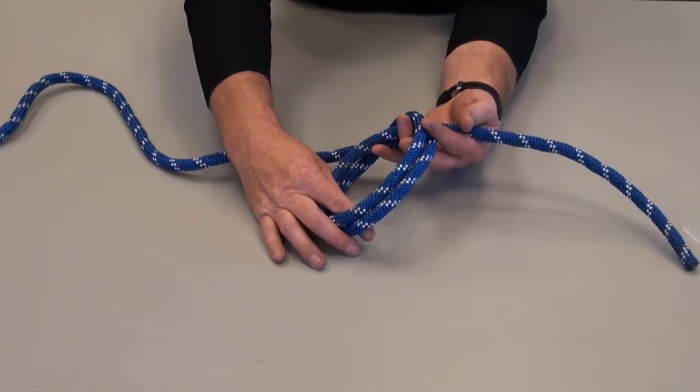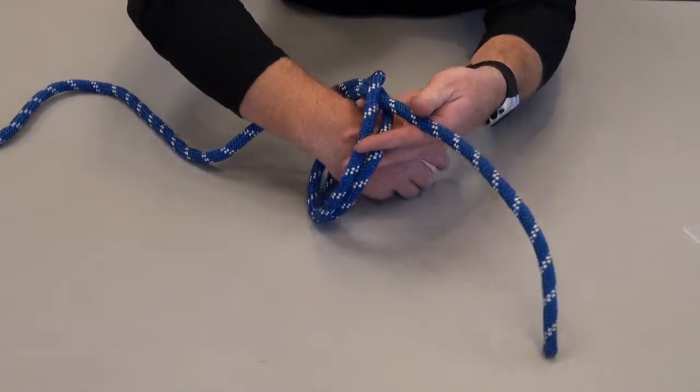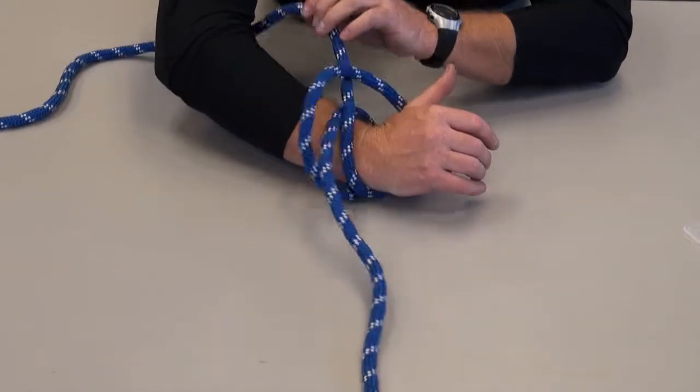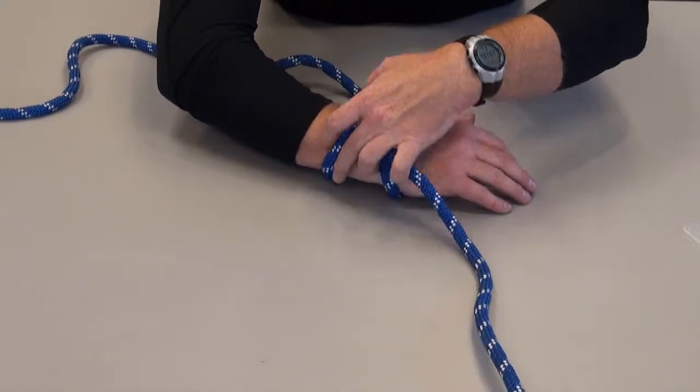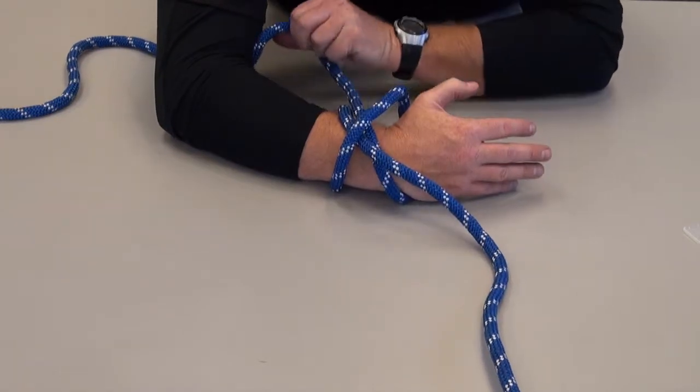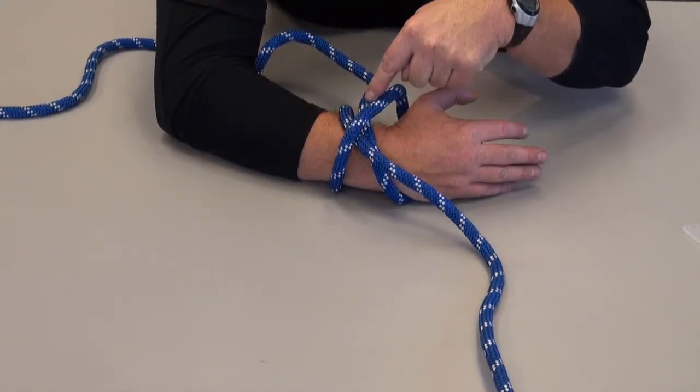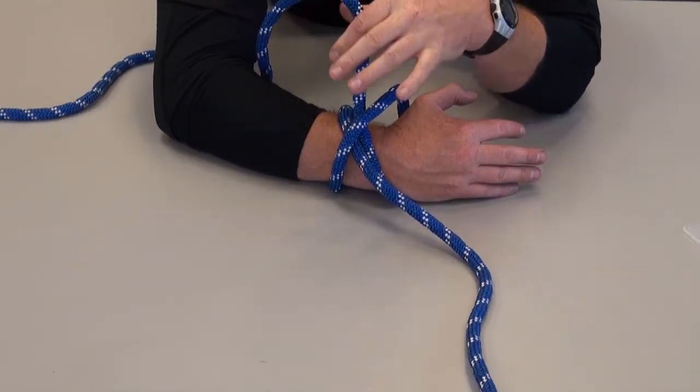The key element to identifying a clove hitch is that when you wrap it around an anchor and you look at how it separates out, you're going to identify that you end up with an X, here is the X, and two tails coming out of the hitch in opposite directions.